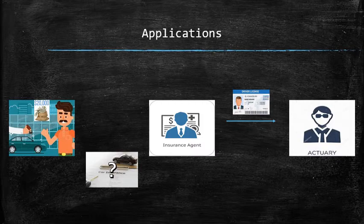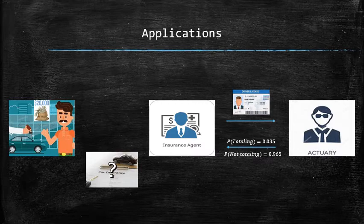And using the data, they can estimate the probability of Bobbert totaling his car in the next year. So let's say the probability of him totaling his car during the next year is estimated to be 3.5%. Using the complementary rule, we can compute the probability of him not totaling his car, which is 96.5%.